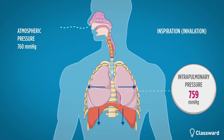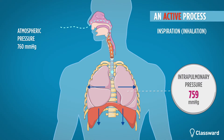As a result of the larger volume, the intrapulmonary pressure has dropped within the lungs to 759 mmHg, causing air to be drawn in from the outside. Due to the contraction of the muscles, we call inspiration an active process.